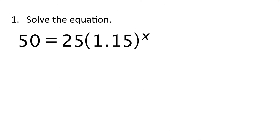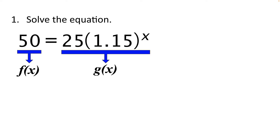Let's start by solving the equation 50 equals 25 times the quantity 1.15 raised to the x-power. We'll call the left side of the equation f of x, so f of x will be equal to 50. Then we'll let g of x equal the right side, so g of x will equal 25 times the quantity 1.15 raised to the x-power.